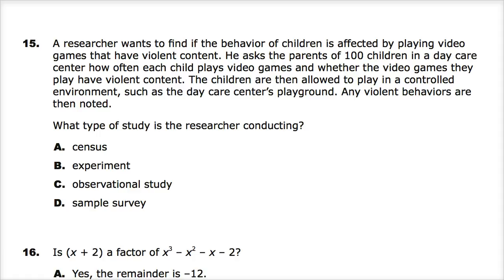What type of study is the researcher conducting? First off, the researcher picked specific people to be in his group, and that's one of the components in the answer here. Another is that he actually engages in seeing what they're doing — he measures what happens after he collects data, but he doesn't control it. He doesn't ask what's already happened; he's specifically looking for things to happen with a preconceived idea of what he's looking for.